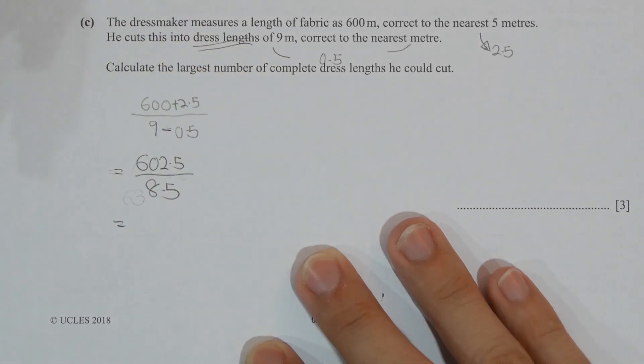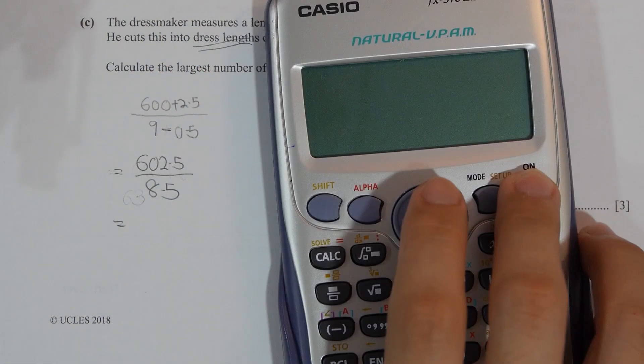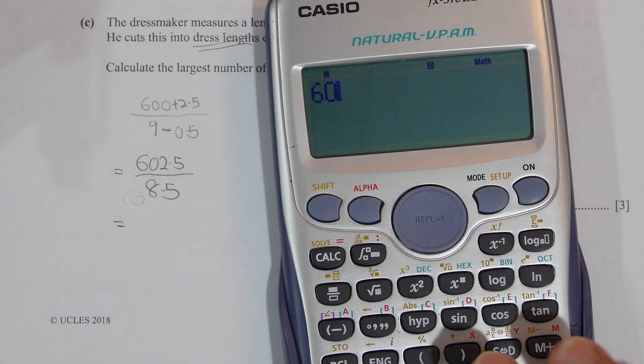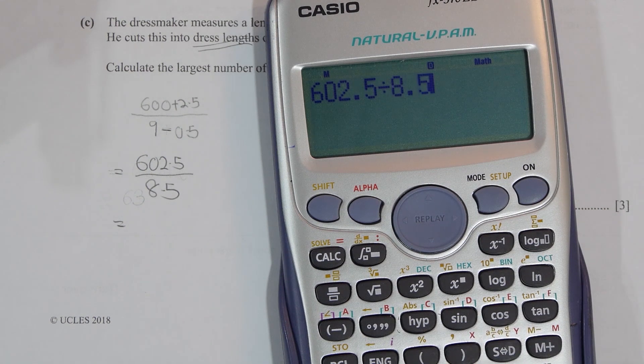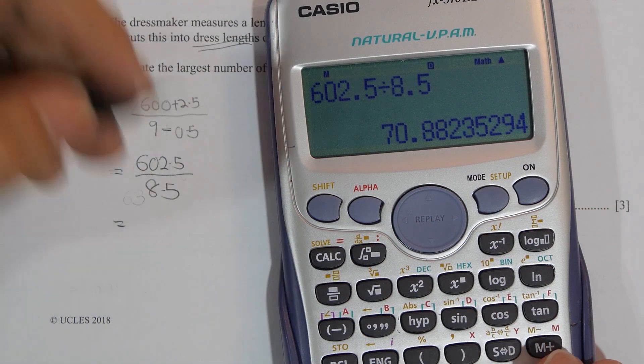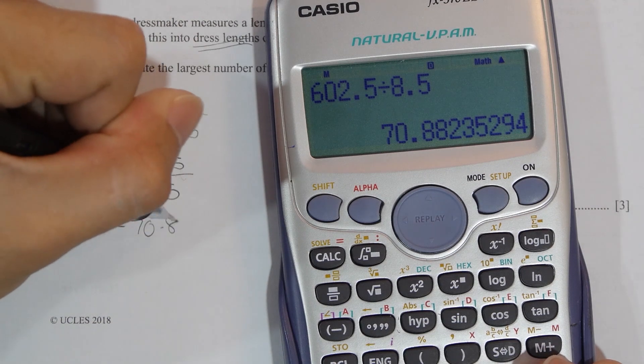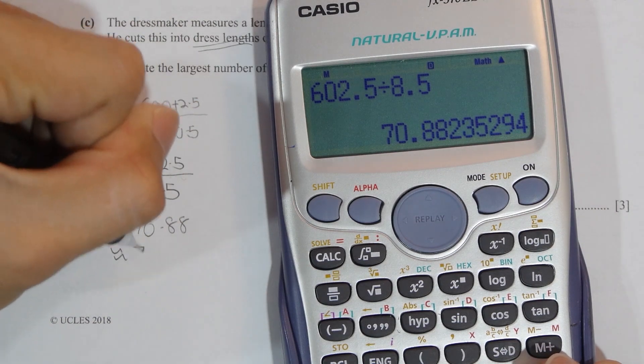So after you run the calculation, it's actually 602.5 over 8.5. So your answer will be 70.